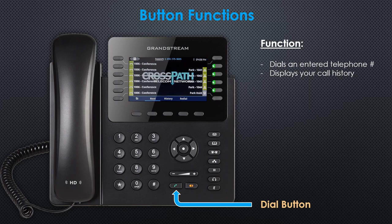The dial button has two functions. After a telephone number is entered, you can press this button to initiate the call. If the telephone is in standby, this button will display the most recent list of dialed calls from your call history menu.